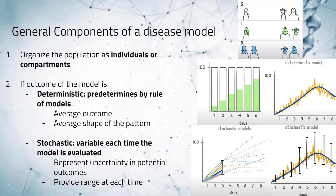Secondly, we want to see if the outcome is deterministic, which means that it can be predetermined based on the rules that were applied to the models. If you look at the graph on the top left, you can see that the outcome is incrementing at a constant rate, and that is an example of a deterministic model.